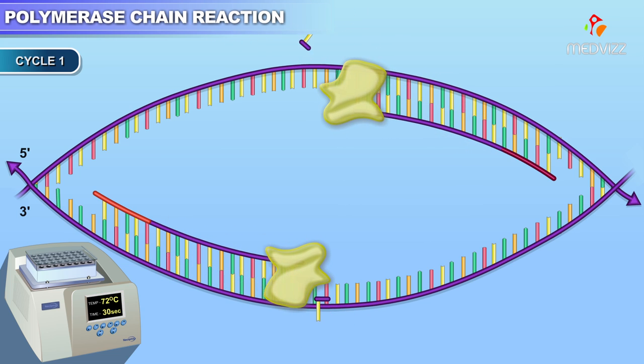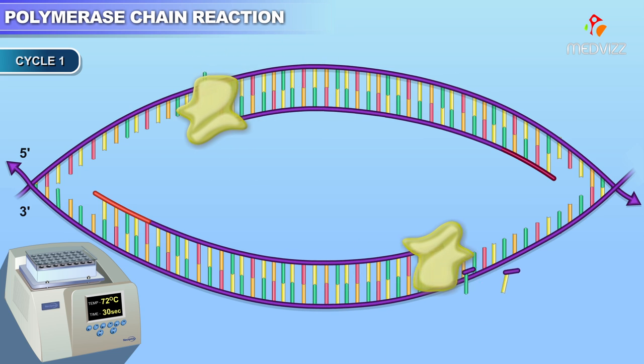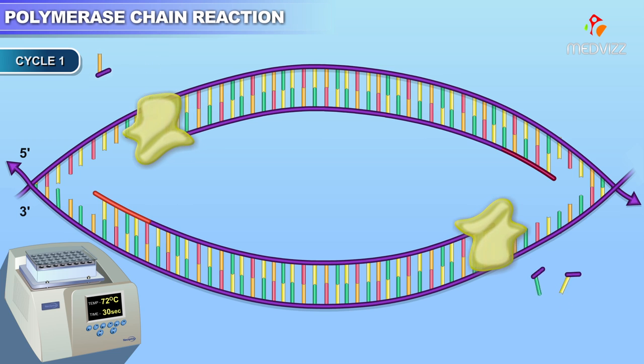The polymerase uses the primers as starting points for DNA synthesis, adding one nucleotide at a time to create a complementary strand of DNA.